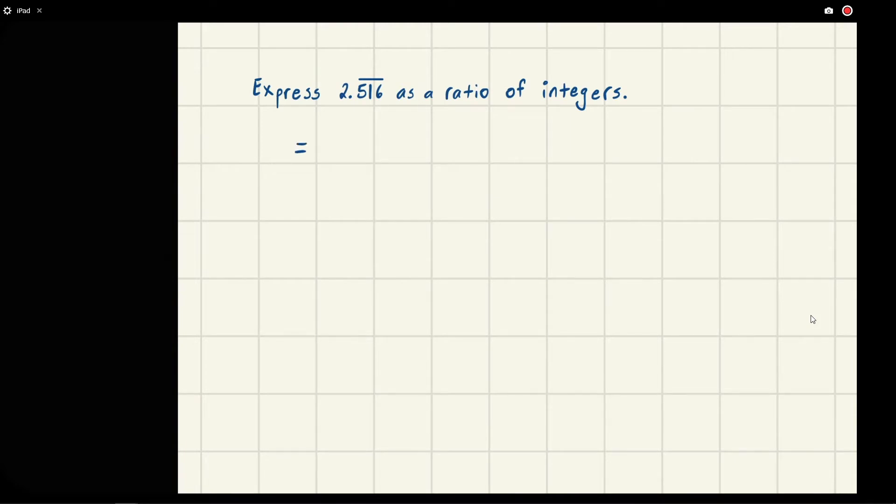We can rewrite this as 2 plus... this 0.516 repeats over and over, right? 516. This first one ends at the tens, hundreds, thousands place. So this is 10 to the 3.